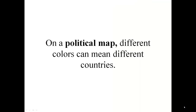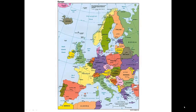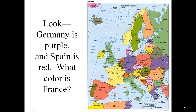On a political map, different colors can mean different countries. Look, Germany is purple and Spain is red. What color is France?